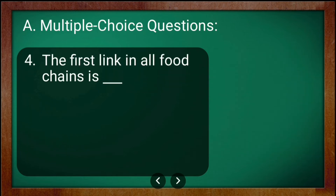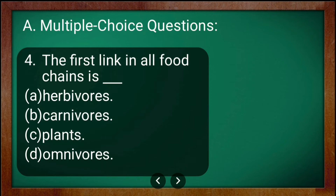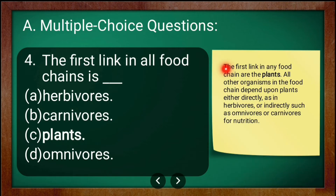Question number four: what is the first link in all food chains? The options are herbivores, carnivorous plants, and omnivores. The answer is plants. The first link in any food chain is plants, and all other organisms depend on plants either directly, as in herbivores, or indirectly, such as omnivores or carnivores.